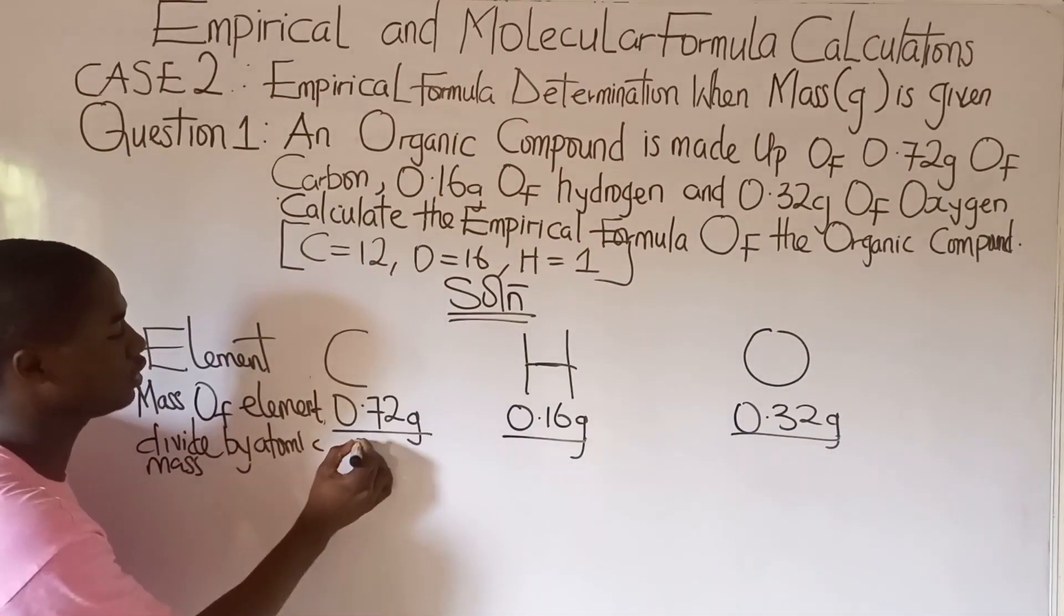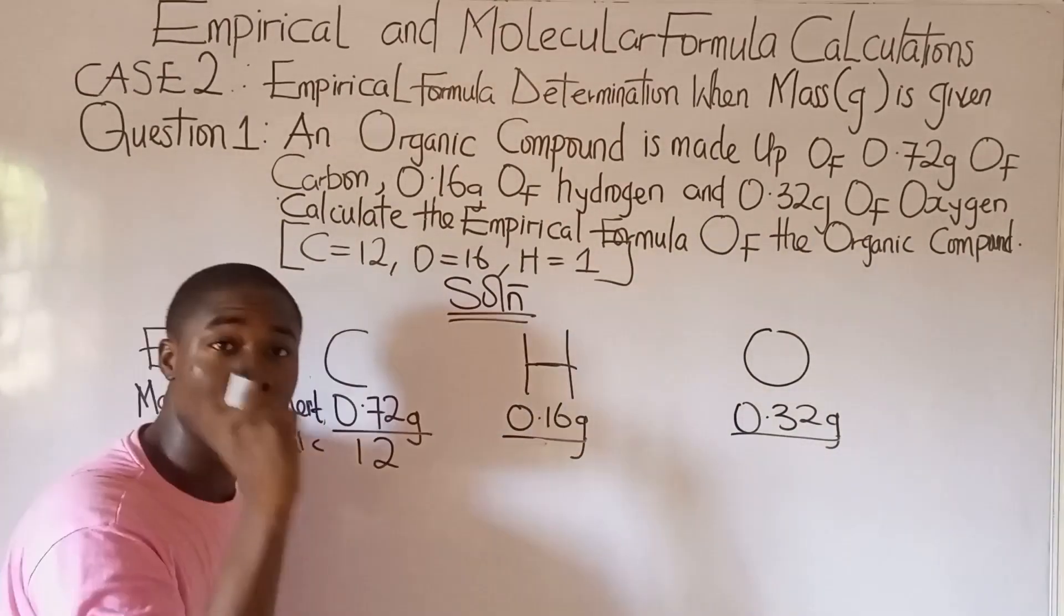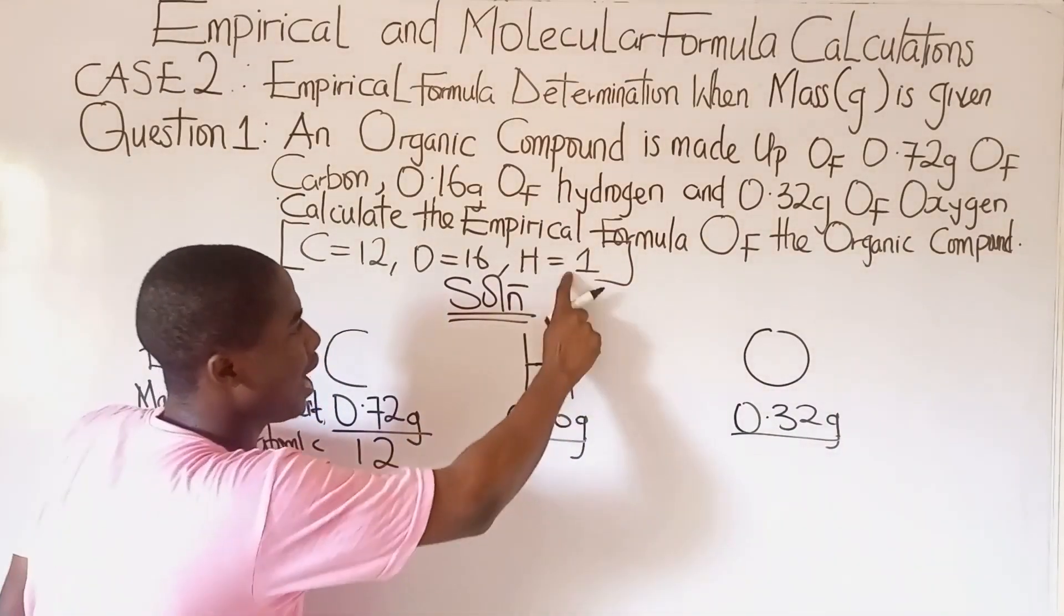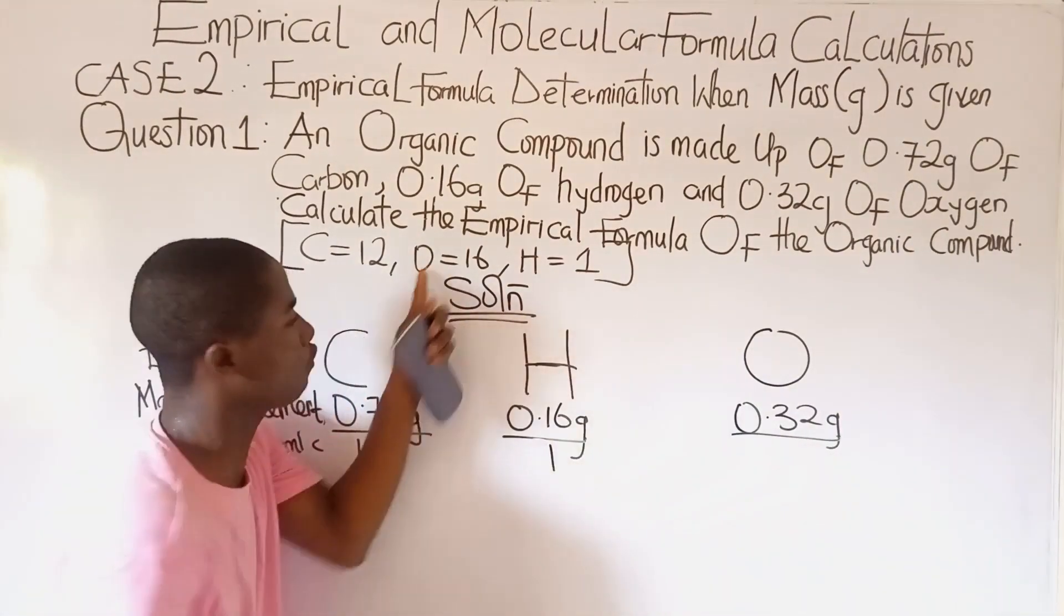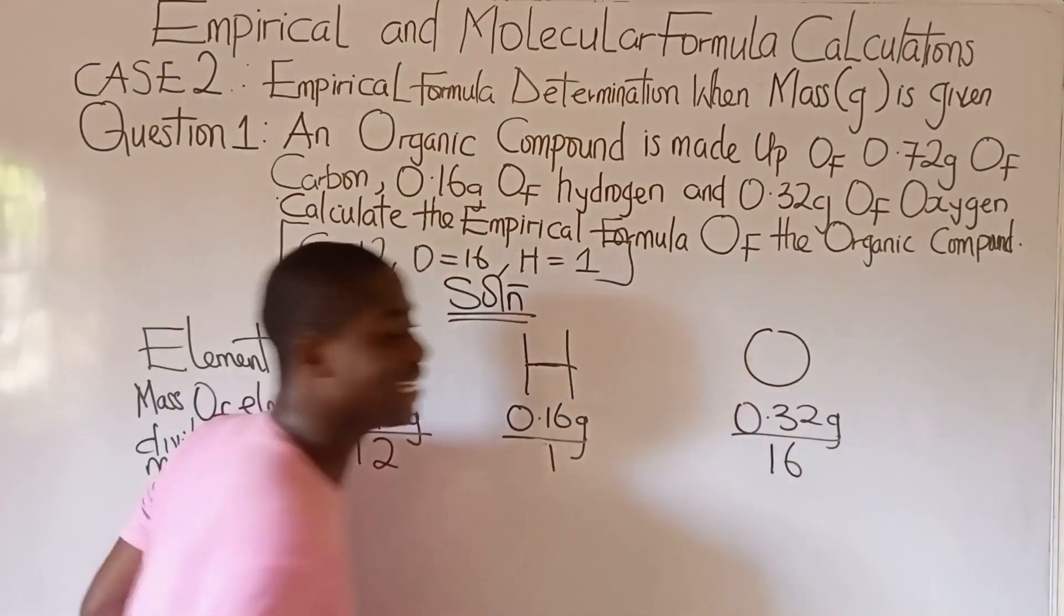The atomic mass of carbon is 12, so we divide by 12. The atomic mass of hydrogen is 1 and the atomic mass of oxygen is 16.